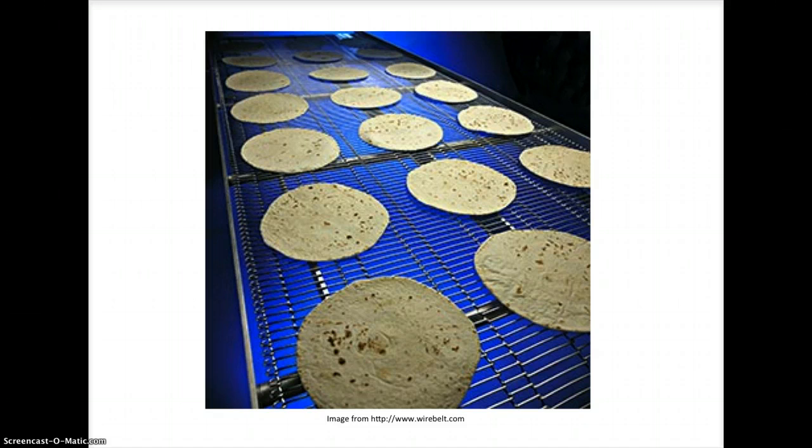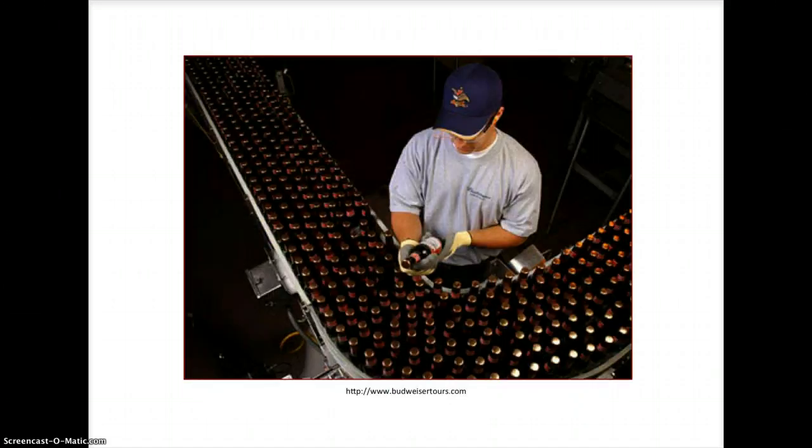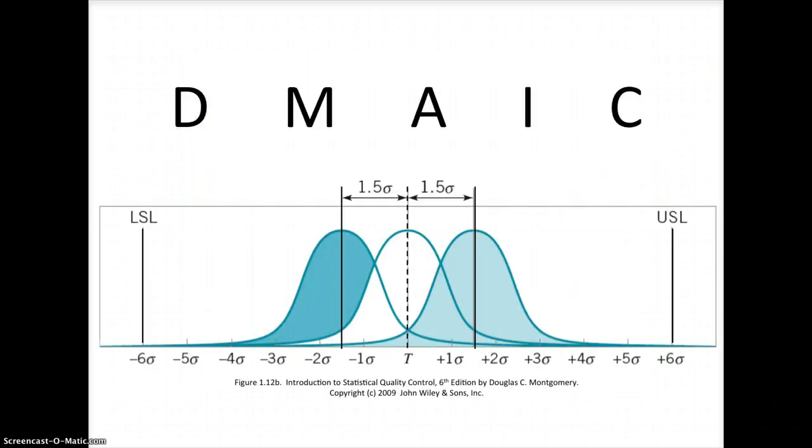So how do we measure quality? One thing we can do is inspect. We have an inspector here looking at bottles. Maybe he's checking the seal, maybe he's checking to make sure there's no sediment on the bottom. But we can't inspect everything. There's no way he can look at every single one of these bottles before they get shipped out. They'll never get shipped out, it'll take too long. And that's where quality management programs come in.